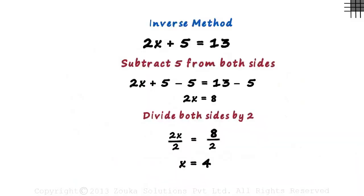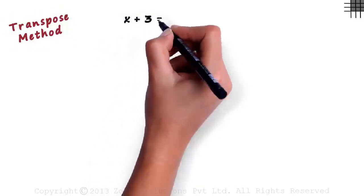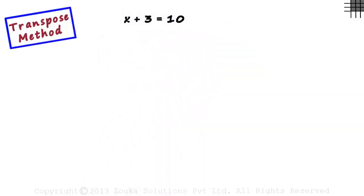This is where we left off in the previous video. We used the inverse operations method to find the value of x in this equation. Let's move on to the second method, which is the transpose method. The good news is that this method is as simple as the first one. We consider the same equation: x plus 3 equals 10. Before we actually implement the transpose method, we need to understand a few concepts.